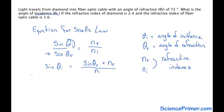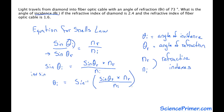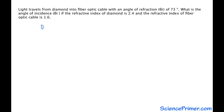We then take the inverse sine of both sides to get the sine away from the variable we're trying to solve for. So if we take the inverse sine, we get theta i equals the inverse sine of everything else on the other side of the equation. Now we have the problem solved for the variable we're trying to find. The next step is to plug all the other variables into this equation, starting with a clean slate with our equation solved for the variable we're trying to find.